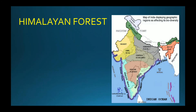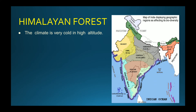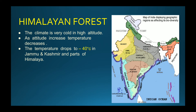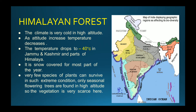Himalayan forests: the white color on the map represents the cold desert. Just below that, the green color on both sides is the Himalayan forest. The climate is very cold at high altitudes — as altitude increases, temperature decreases. Temperature can drop to minus 40 degrees Celsius in Jammu and Kashmir and parts of the Himalayas. It is snow-covered for most of the year, so very few plant species can survive. Only seasonal flowering trees are found at high altitude, making vegetation very scarce.